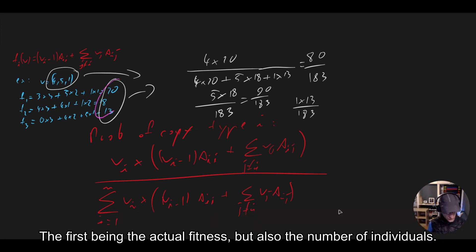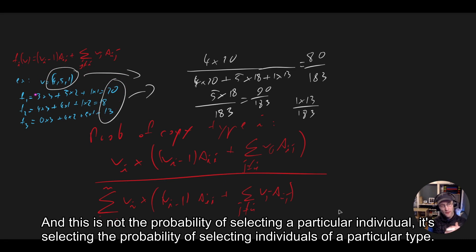The first being the actual fitness, but also the number of individuals. And this is not the probability of selecting a particular individual, it's the probability of selecting individuals of a particular type.